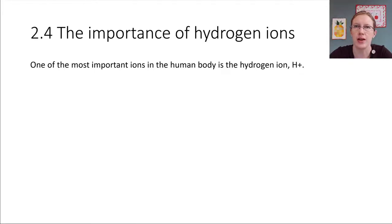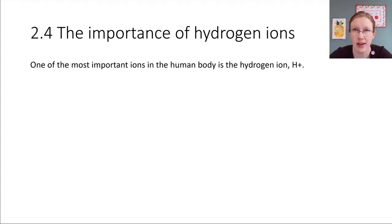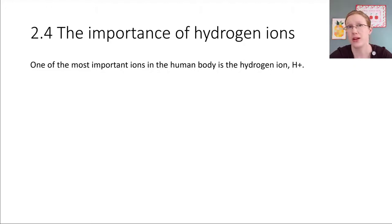As mentioned earlier, an ion is an atom that has an imbalance of protons and electrons. One of the ions we are going to be encountering a lot this semester is the hydrogen ion, so we want to make some notes about it now so that we're able to refer back to it later on.